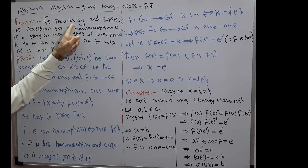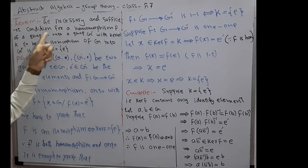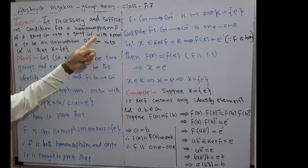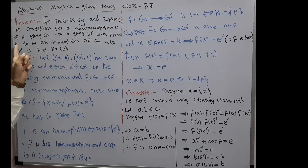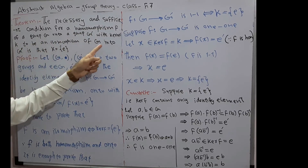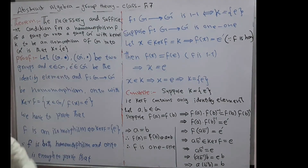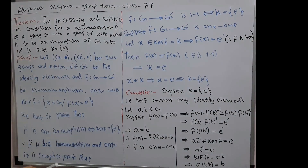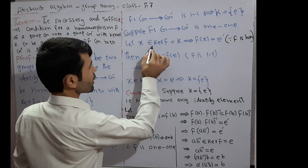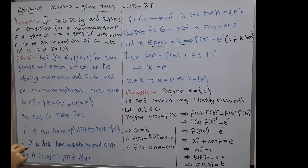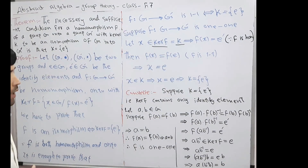The necessary and sufficient condition for a homomorphism of a group G onto a group G' with kernel K to be an isomorphism of G into G' is that K equals E. K means kernel.